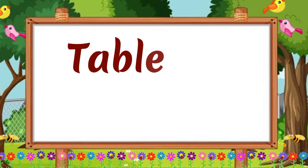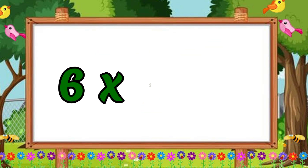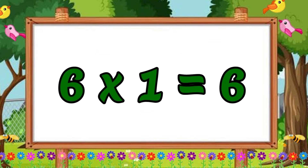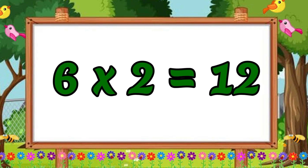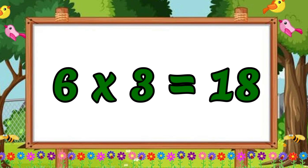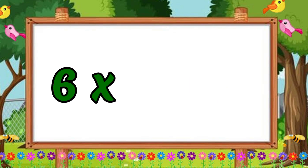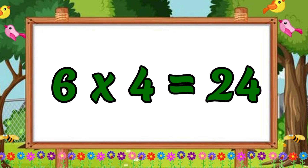Six ones are six. Six ones are six. Six twos are twelve. Six twos are twelve. Six threes are eighteen. Six threes are eighteen. Six fours are twenty-four. Six fours are twenty-four.